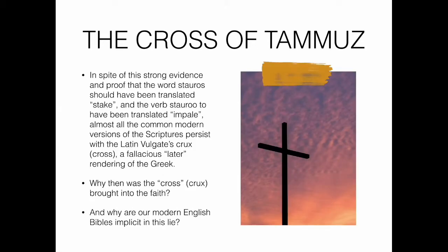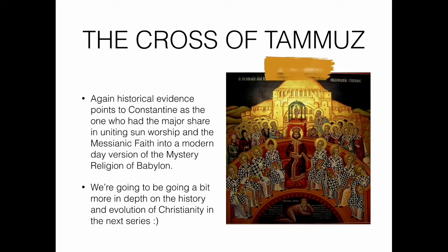In spite of this strong evidence that 'stauros' should have been translated 'stake' and 'stauroo' translated 'impale,' almost all common modern versions of the scriptures persist with the Latin Vulgate's crux or cross — a fallacious, later rendering of the Greek. Why then was this cross brought into the faith, and why are our modern English Bibles complicit in this? Historical evidence points to Constantine.